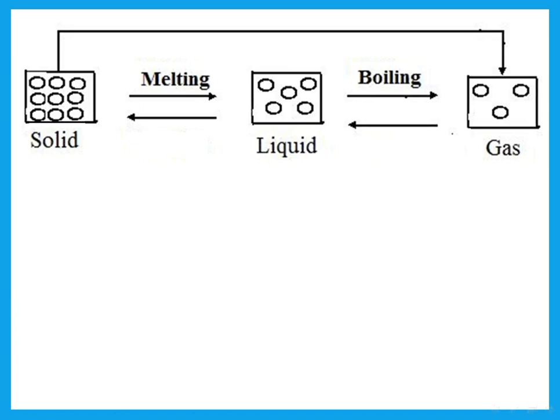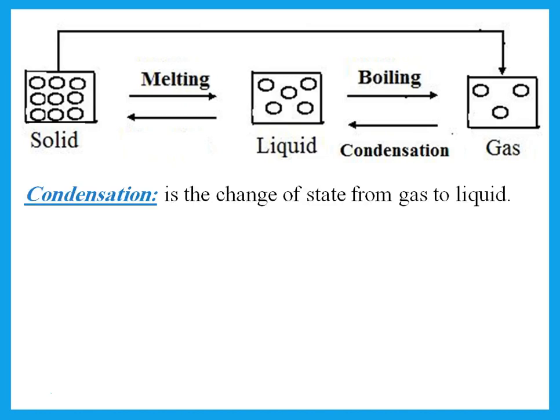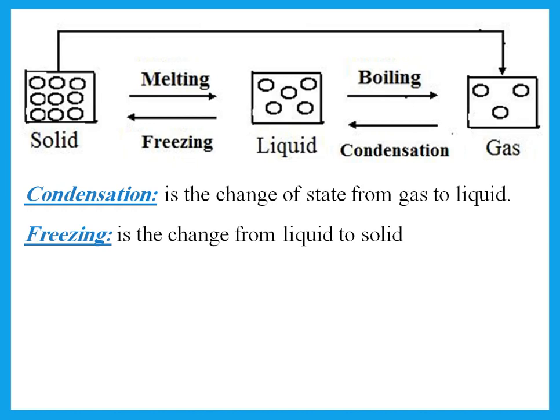Going back from gas to liquid, we need to cool. If you cool the gas particles, they change into liquid — this is called condensation. Condensation is the change of state from gas to liquid. If you cool the liquid, it becomes solid — that is called freezing. Freezing is the change from liquid to solid.